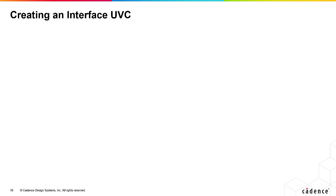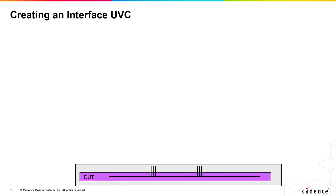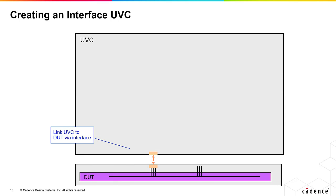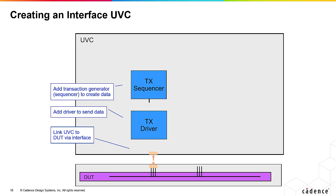Let's look at creating an interface UVC. Here's our DUT connected to our UVC via a system Verilog interface. On the input or transmitter side, we need a driver component to implement the protocol to send data into the DUT. We need a transaction generator or sequencer to create the data.